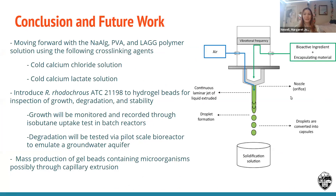In conclusion, we'll be moving forward with the sodium alginate, PVA, and low acyl gellan gum polymer solutions using cold calcium chloride and cold calcium lactate as our crosslinking agents. We plan to introduce the microorganisms to the hydrogel beads by incorporating their solution with the polymer solution and testing for growth, degradation, and stability. Growth will be monitored through isobutane uptake tests using batch reactors, and degradation will be tested using a pilot scale bioreactor to emulate a groundwater aquifer.